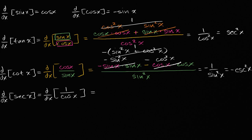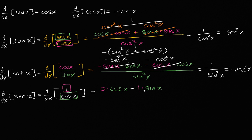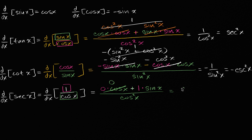This derivative is going to be equal to the derivative of the top — well, the derivative of one with respect to x is just zero — times the function on the bottom, cosine of x, minus the function on the top, which is just one, times the derivative of the bottom. The derivative of cosine of x is negative sine of x, so we have a minus and a negative, which makes it positive. All of that is over the function on the bottom squared, cosine squared of x. Zero times cosine of x is zero, so we're left with sine of x over cosine squared of x.